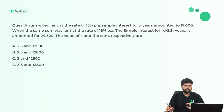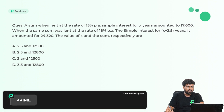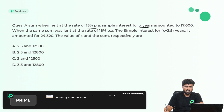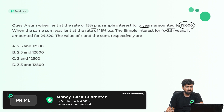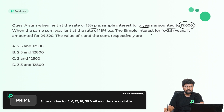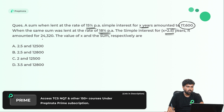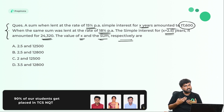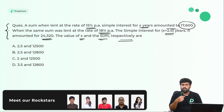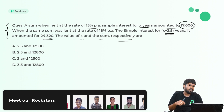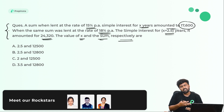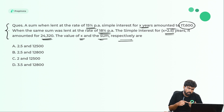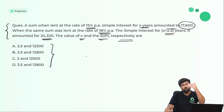Next question: a sum was lent at 15% per annum simple interest for X years and amounts to 17,600 rupees. The same sum was lent at 18% per annum simple interest for X plus 2.5 years and amounts to 24,320 rupees. Find the value of X and the sum. Whenever you have to find more than one variable in simple interest or compound interest problems, the best method is option elimination rather than doing huge calculation procedures.